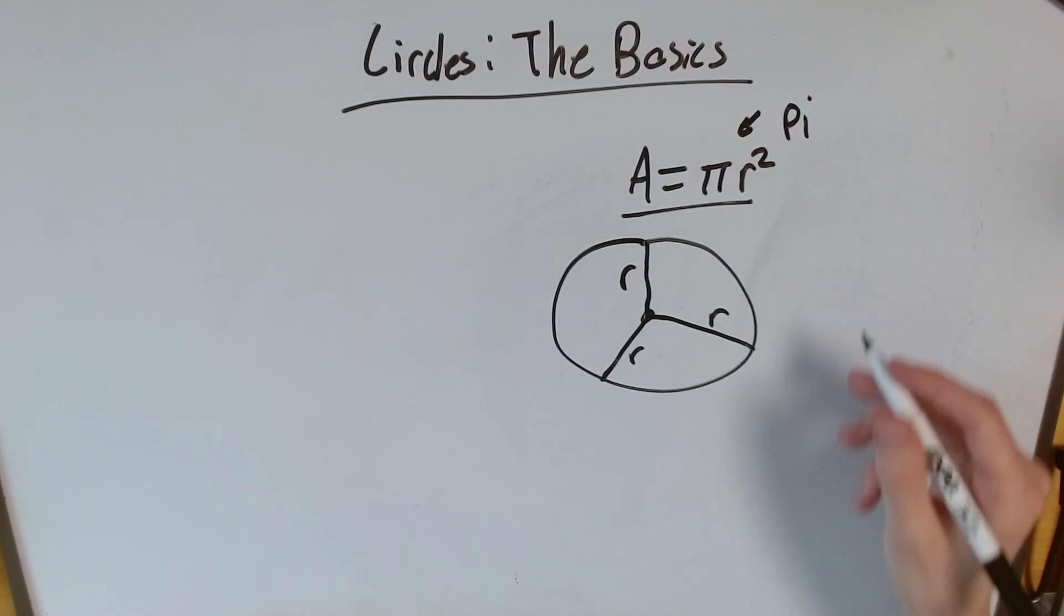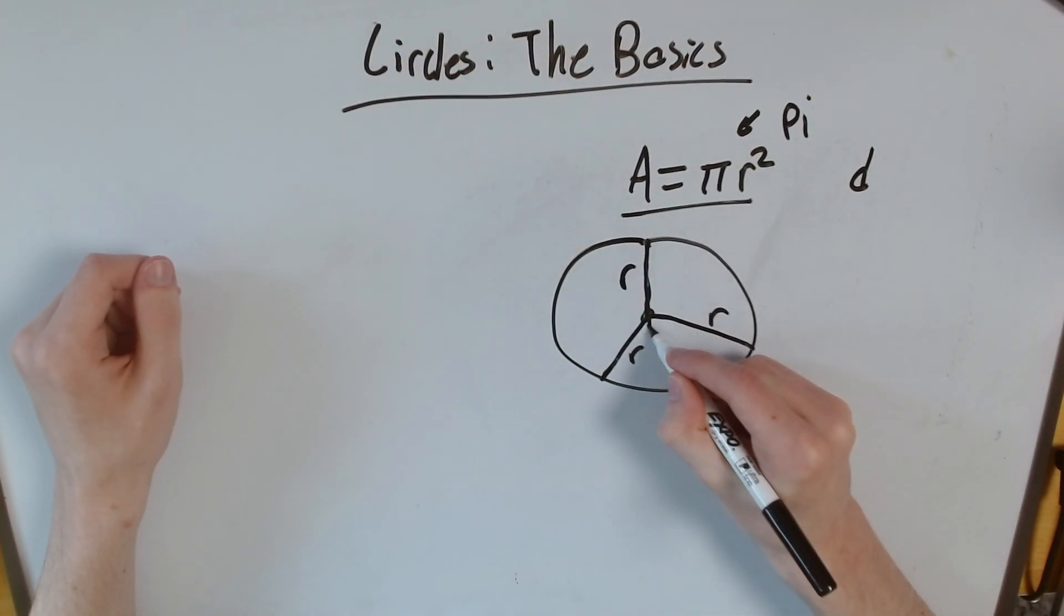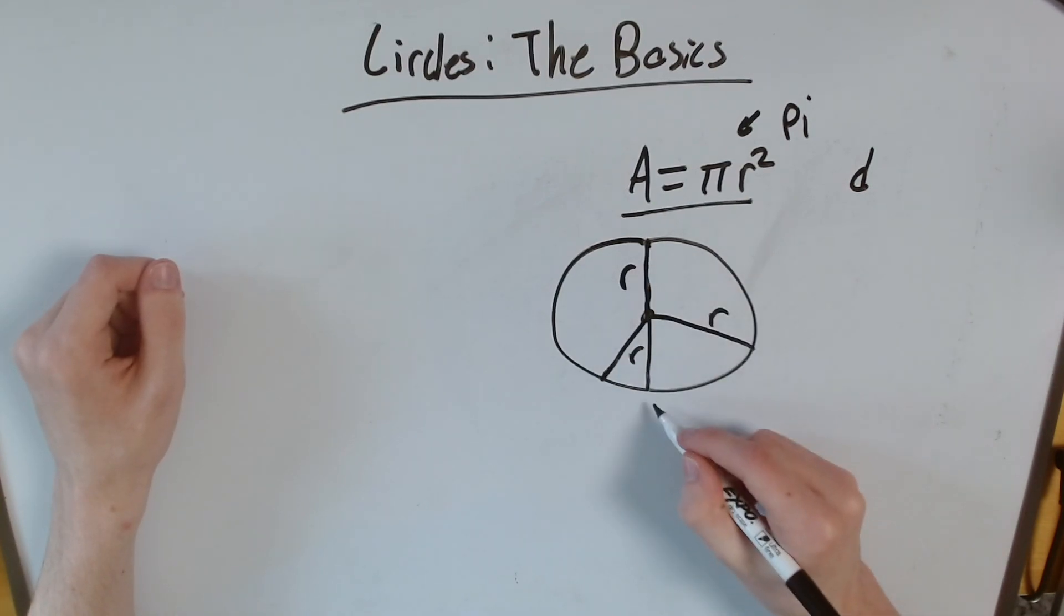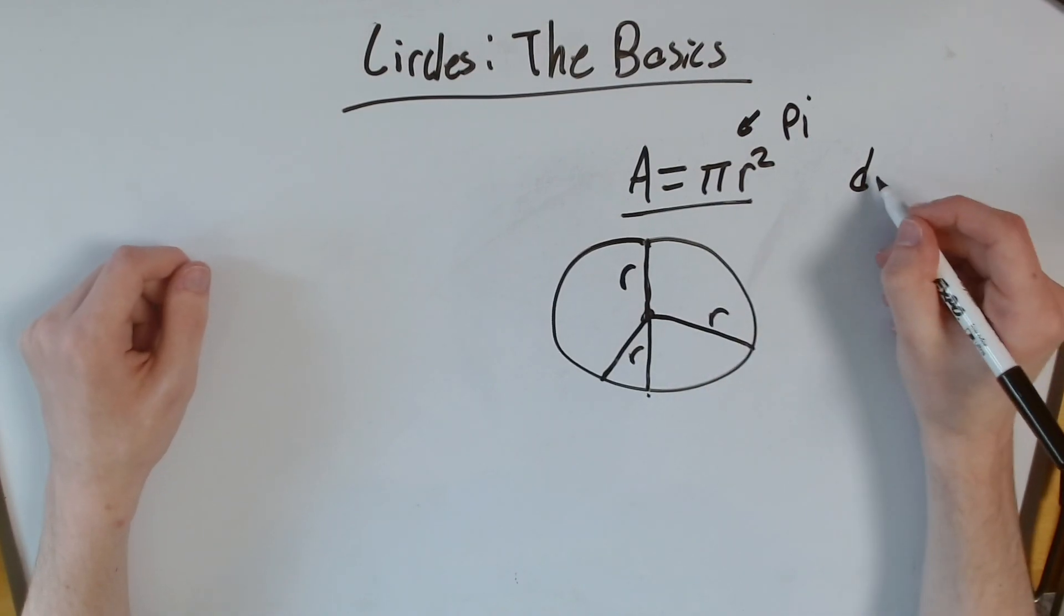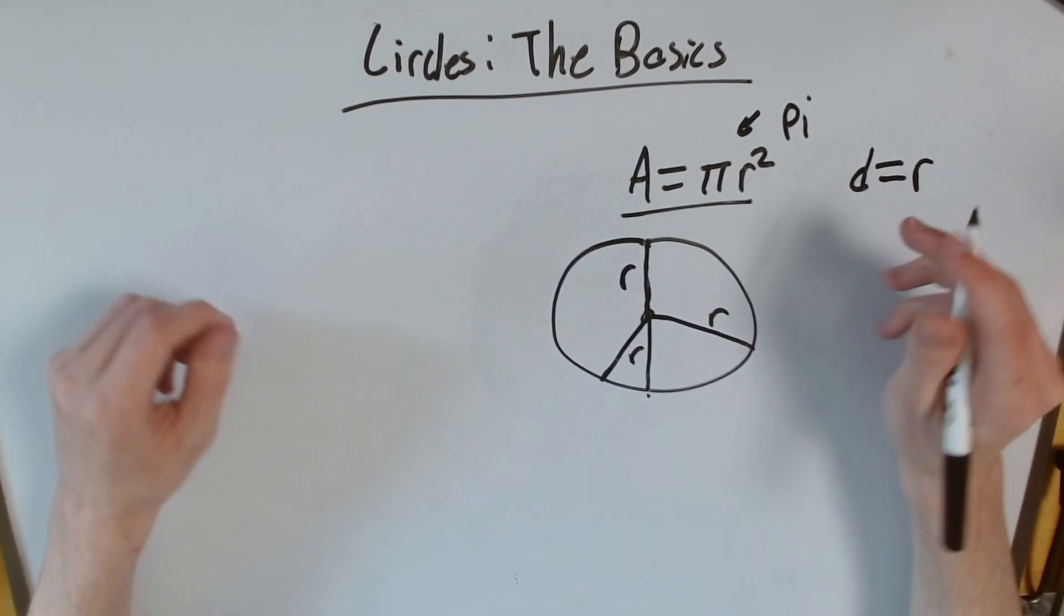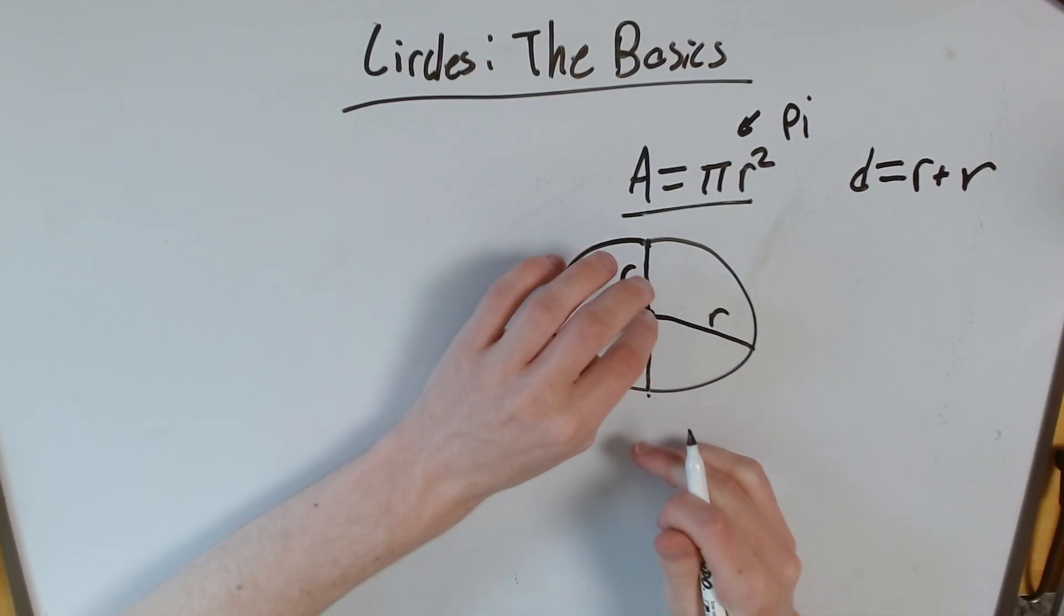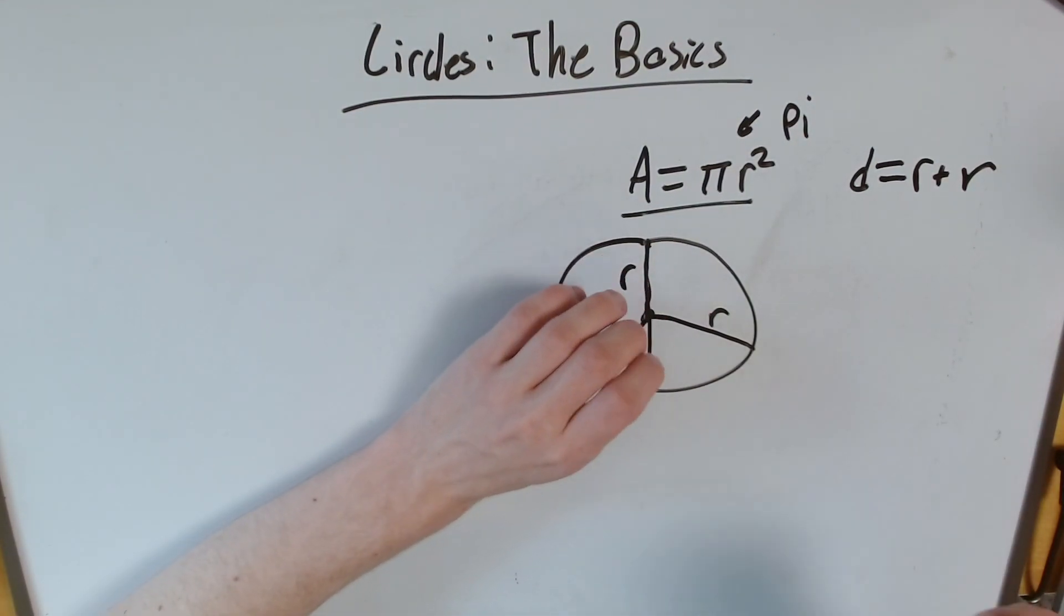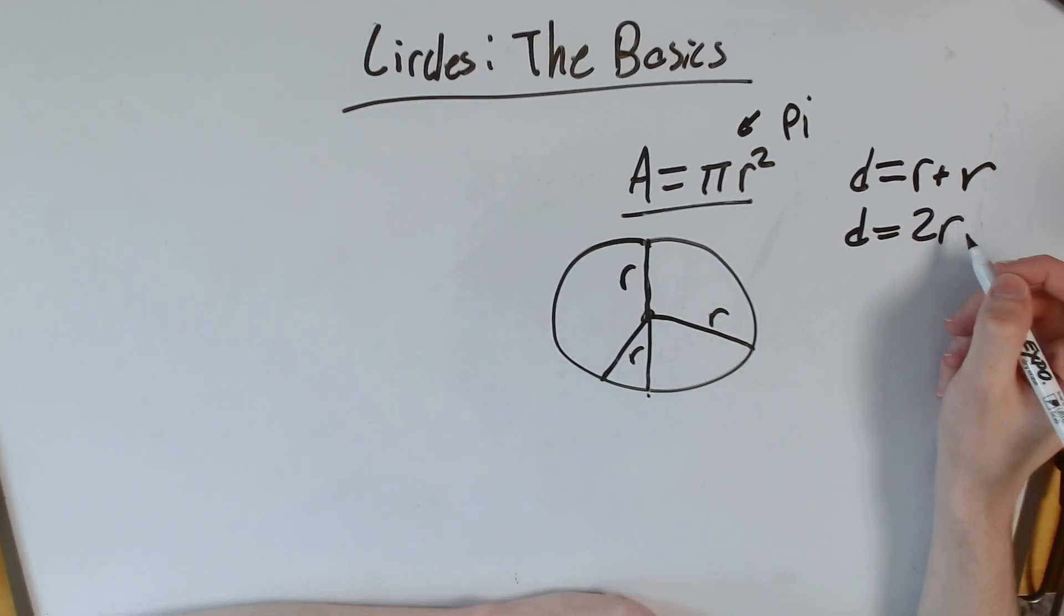Now what's a diameter? Well, a diameter is basically thinking about it as cutting a circle in half. This whole thing, from here to here, is a diameter. And if you look at it, a diameter is a radius, one half from the center to the side, plus another radius from the center to the other side. And so the diameter is two times the radius.